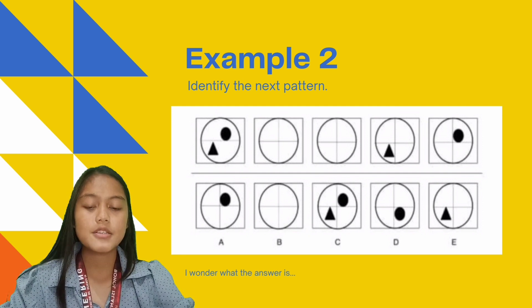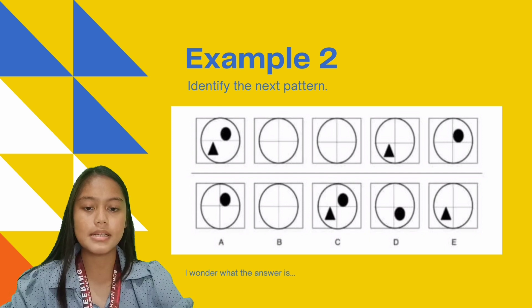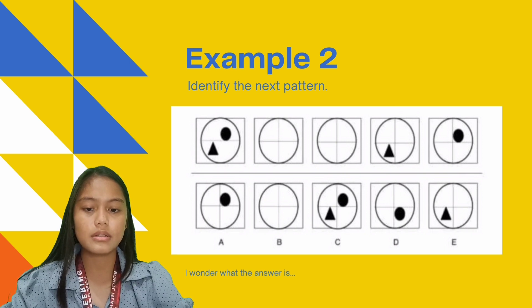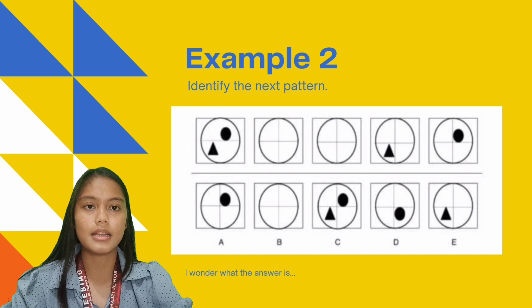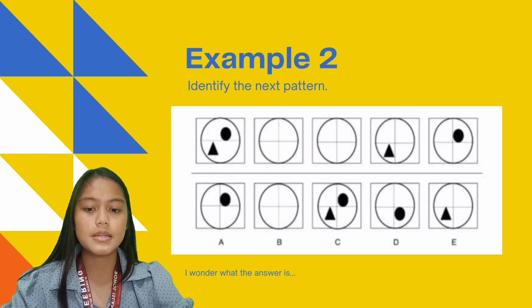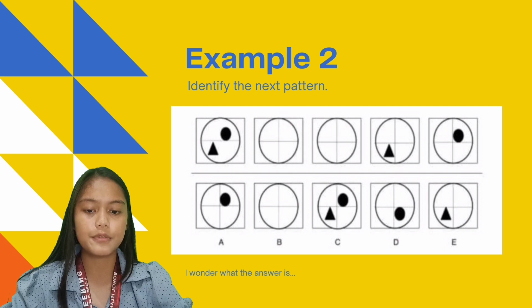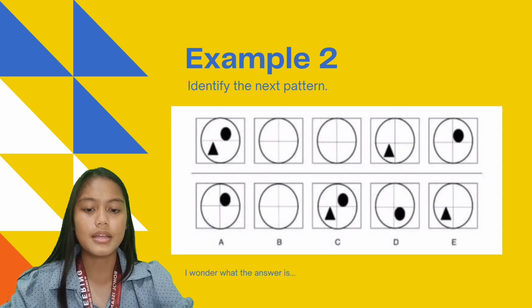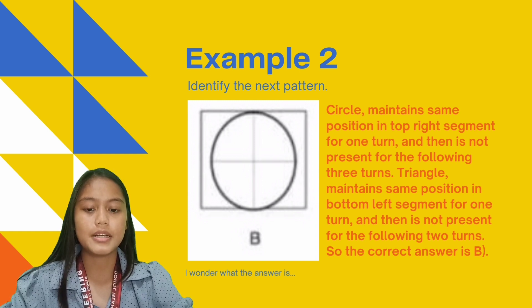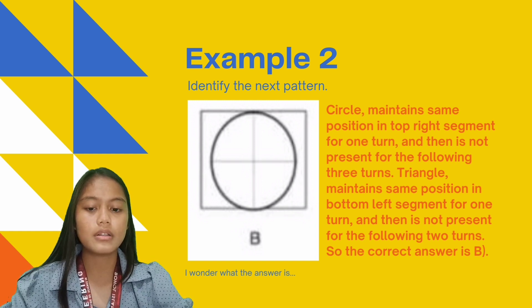If we continue using the pattern, we could say that in the next or sixth figure, the circle must not be seen or present since, according to the pattern, the circle will not be present for the consecutive three turns and probably be seen at the ninth figure. And then, the triangle should also not be seen or present in the next figure since the pattern said that the triangle will not appear for the following two turns and probably be seen in the seventh figure. So, the correct answer would be letter B with no triangle and circle present since it will satisfy the given pattern.